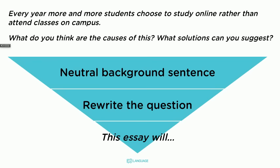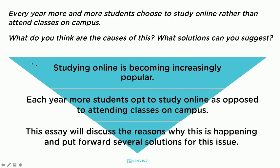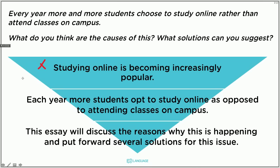Let's have a look at the neutral background sentence: 'Studying online is becoming increasingly popular.' Just a neutral background sentence. Now I rewrite the question in my own words: 'Each year more students opt to study online as opposed to attending classes on campus.' I've just rewritten that in my own words. The third sentence — because this is the problem/solutions question — 'This essay will discuss the reasons why this is happening and put forward several solutions.'